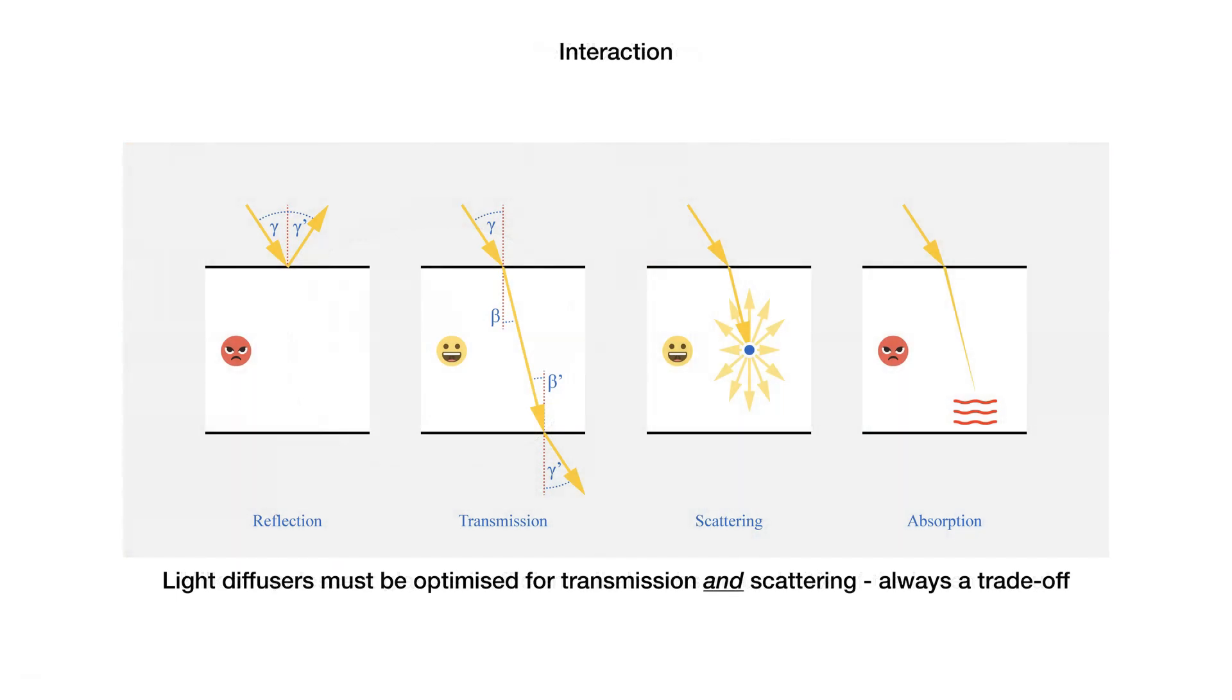When light interacts with a material that has some level of transparency, you should be aware of four factors: Reflection, or how much of the incident light bounces back from the material's surface. Transmission, or how much of the incident light is passing through the material. Scattering, or how much of the incident light is bounced off the particles or molecules the material is made of. Absorption, or how much of the incident light never exits the material and is converted into heat instead.